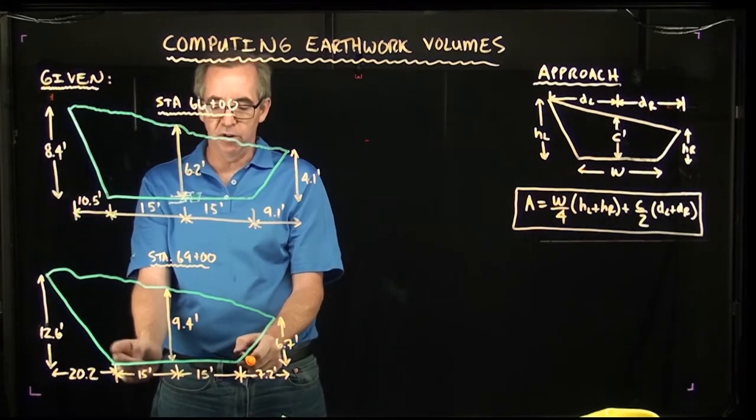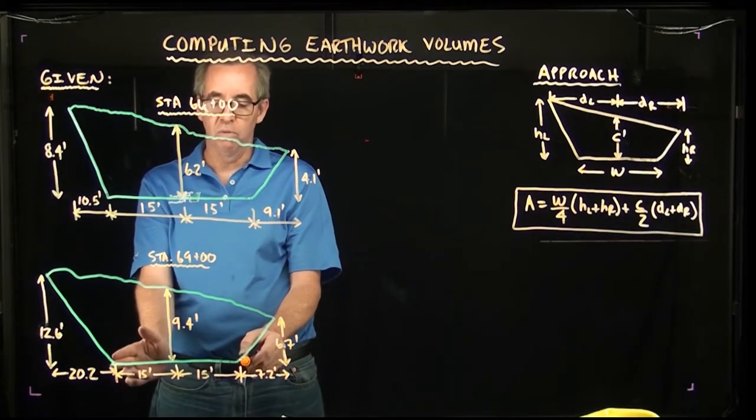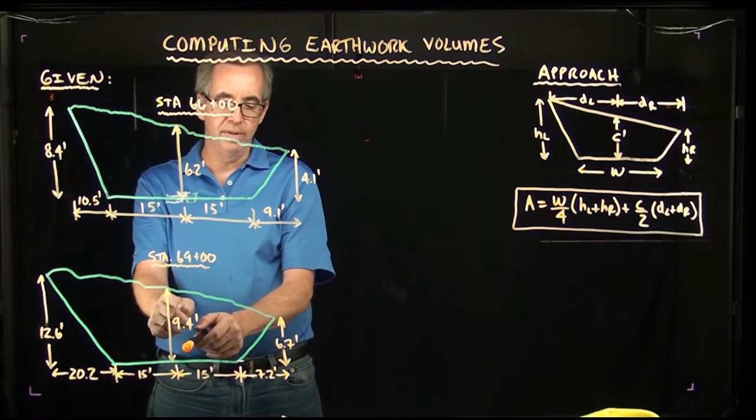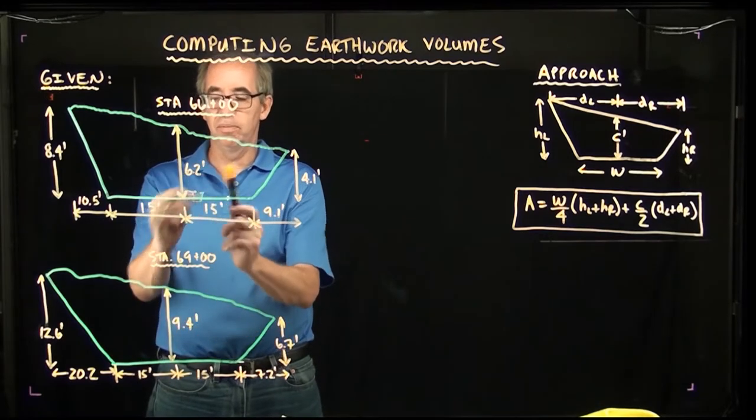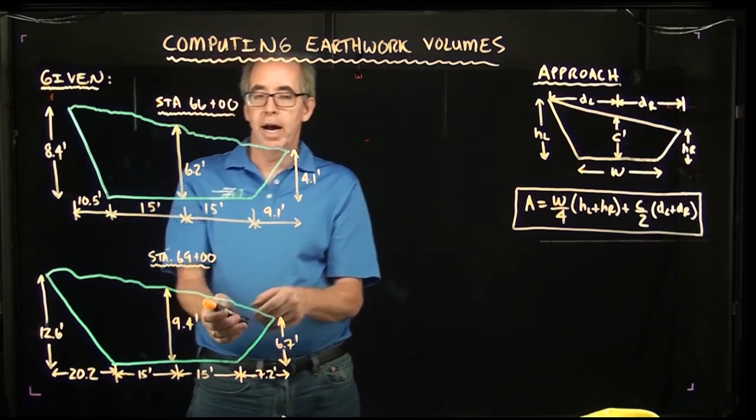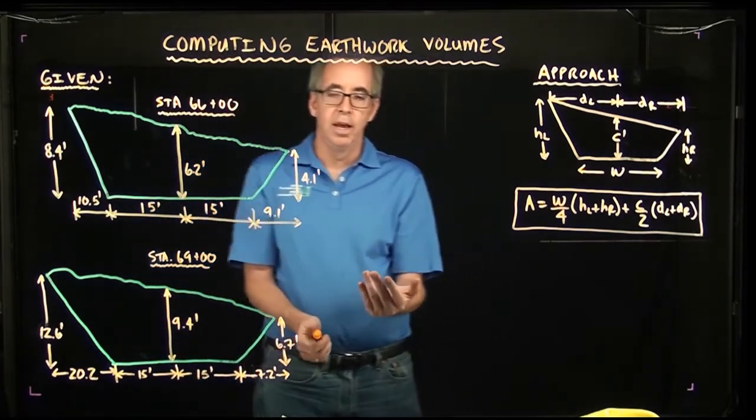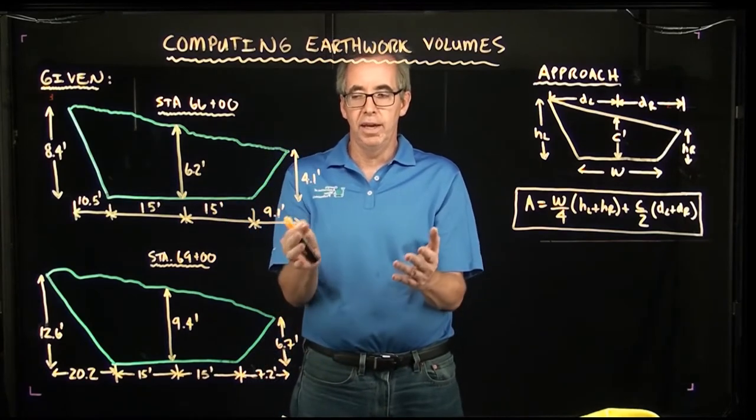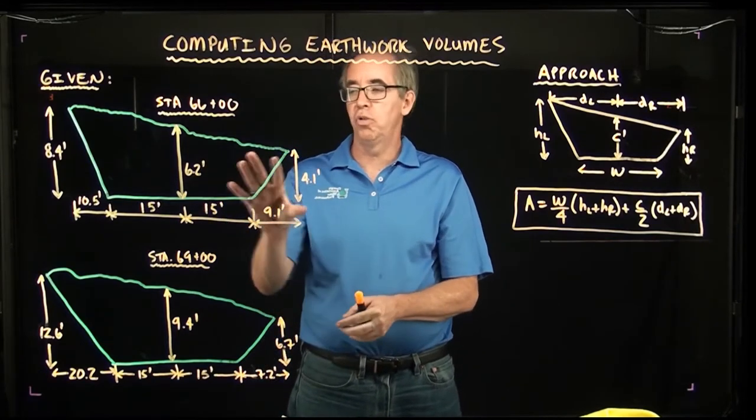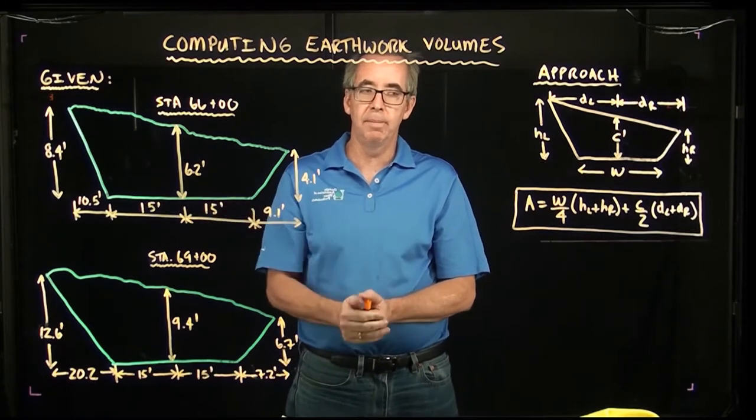Likewise in this cross section we have the same 30 foot wide roadway. You can see we have to cut a little more. This depth at the center is 9.4 versus 6.2. A common application in surveying and in real world application is for the estimator to calculate how much soil is going to be removed for this particular application.